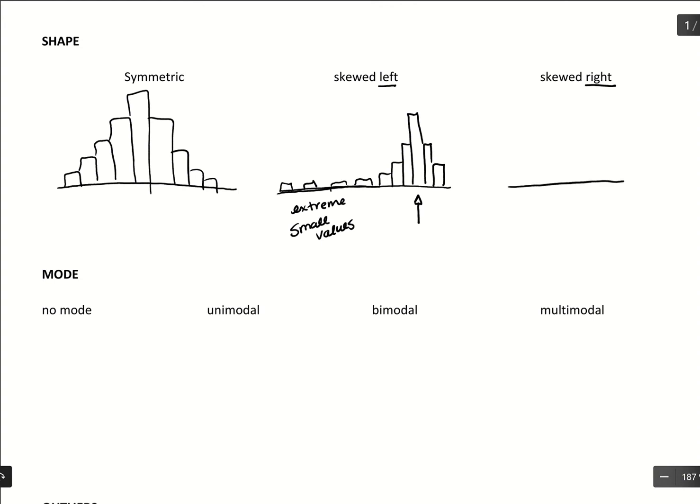Skewed right looks pretty similar, but it switches. It's that most of the data is out at this lower range, so we have almost something that's symmetric, but then it just kind of trails off on the right-hand side. So there's these few extreme, in this case, large values that are coming through.